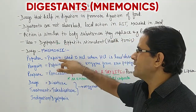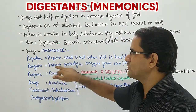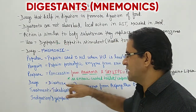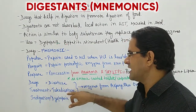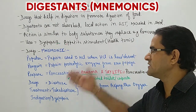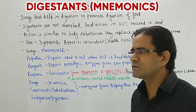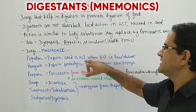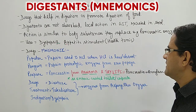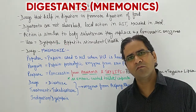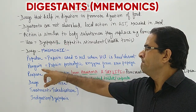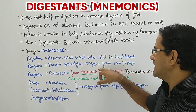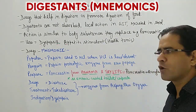In the mnemonic: Popular stands for pepsin, and penguin stands for papain. Pepsin is used with HCL when the HCL content is low or absent in the body. Papain is a proteolytic enzyme obtained from raw papaya.